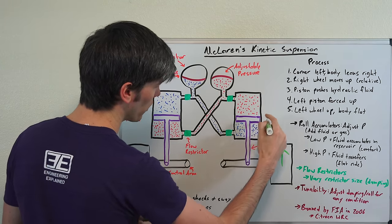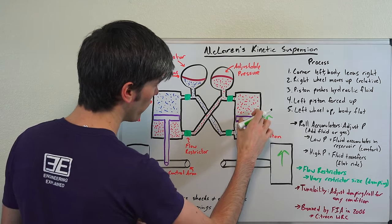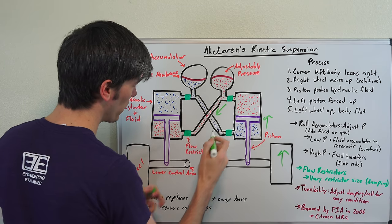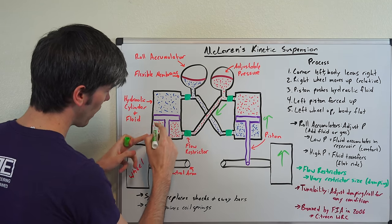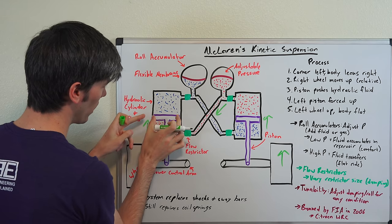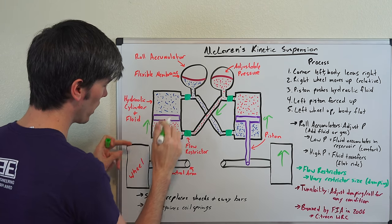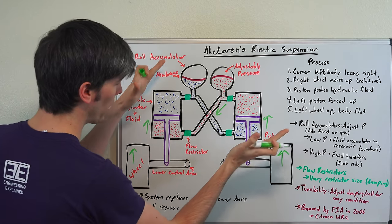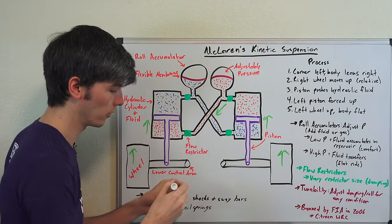You're going to move this piston up. As you move this piston up you're going to force this fluid into here. That fluid is going to push this piston up. As that piston is pushed up it's going to force this wheel up relative to the body, and so you're going to flatten that body out.